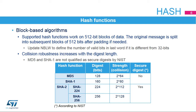All supported hash functions work on 512-bit blocks of data. The input message is split as many times as needed to feed the hash processor, and subsequent blocks are computed sequentially. MD5 is the less robust version with only a 128-bit digest. The SHA standard has two versions: SHA-1 and the more recent SHA-2, with its 224 and 256-bit digest length versions.